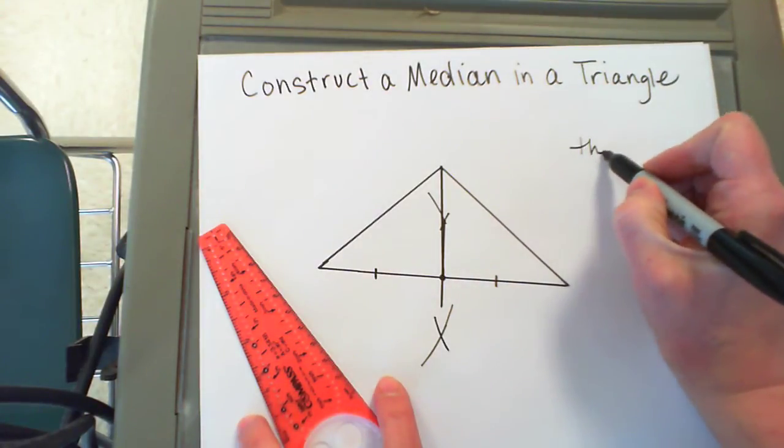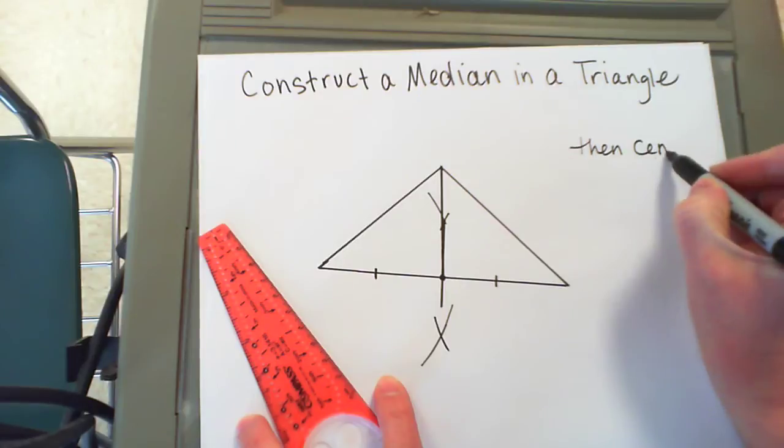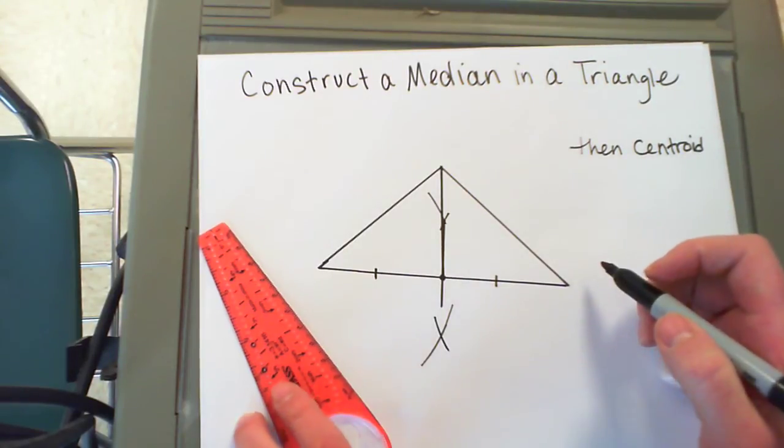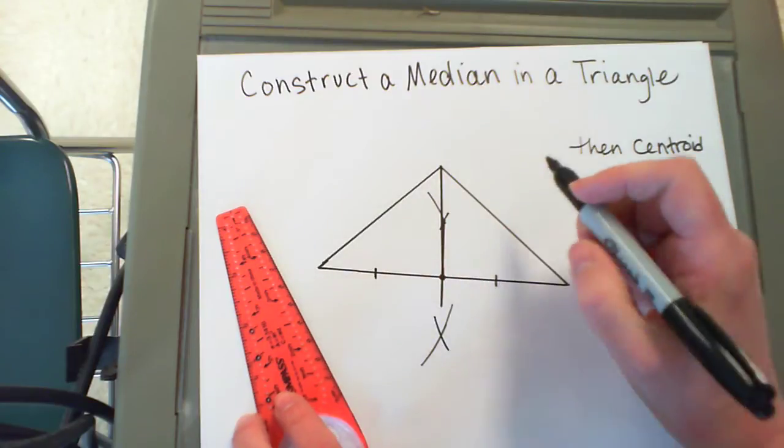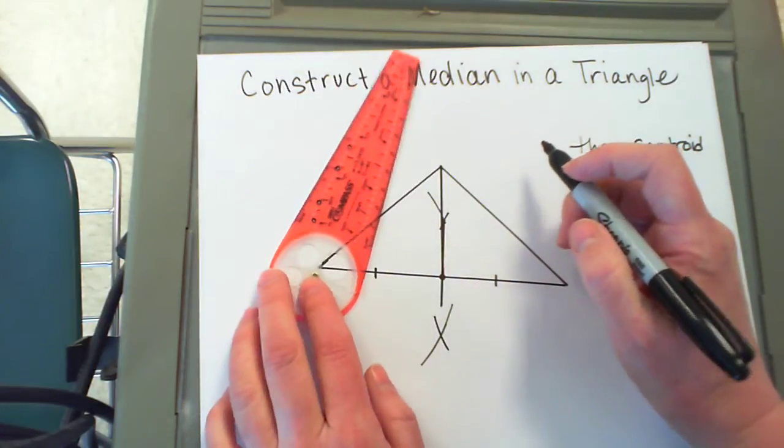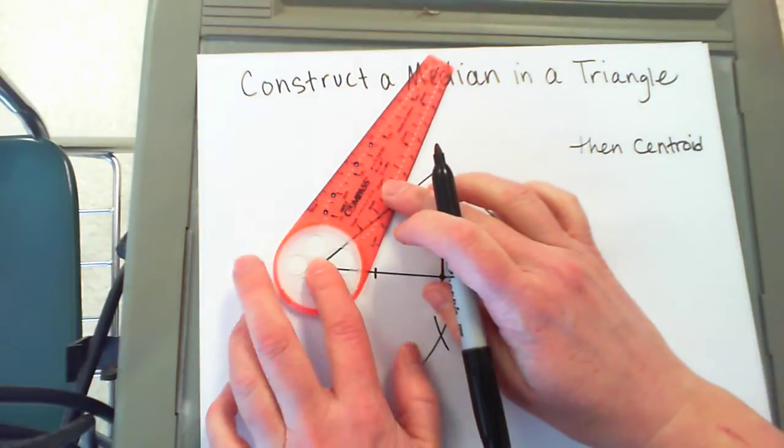If I want to construct the centroid, I need to construct another median. So I'm going to make the median from this side, so I need to make the perpendicular bisector to find the midpoint.